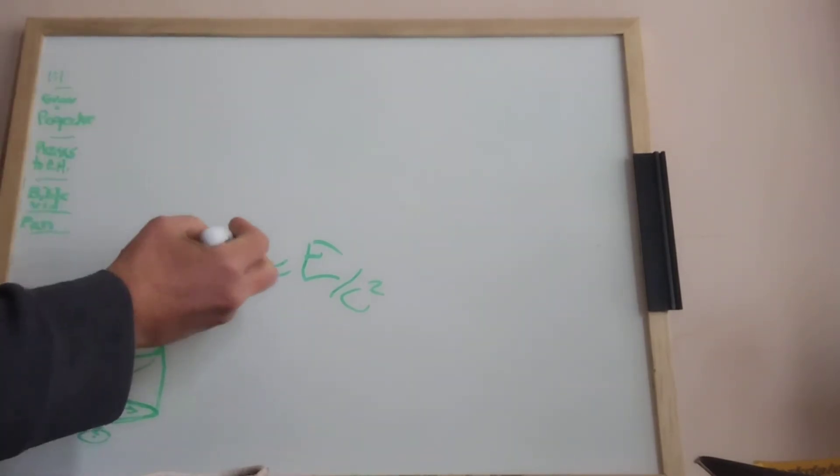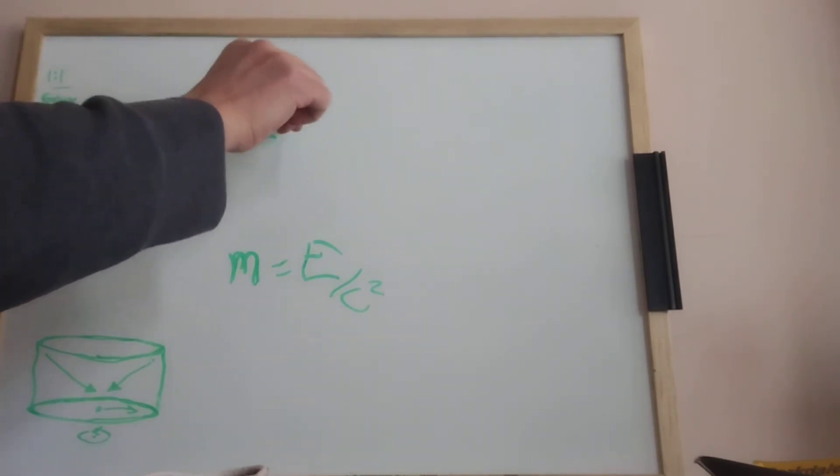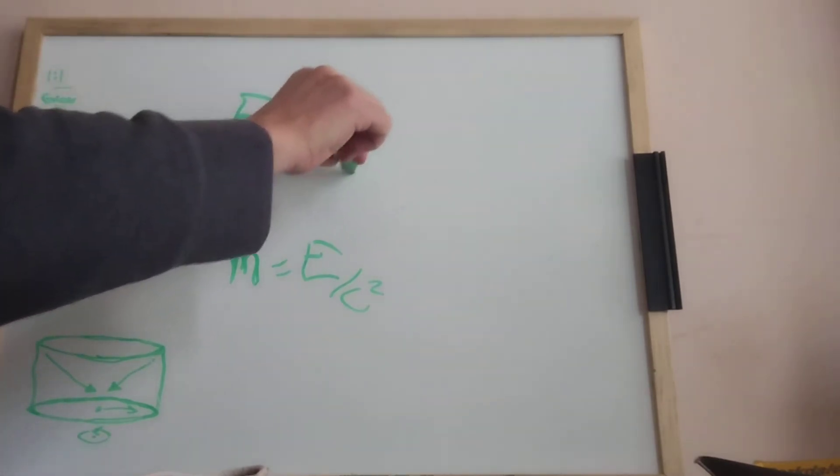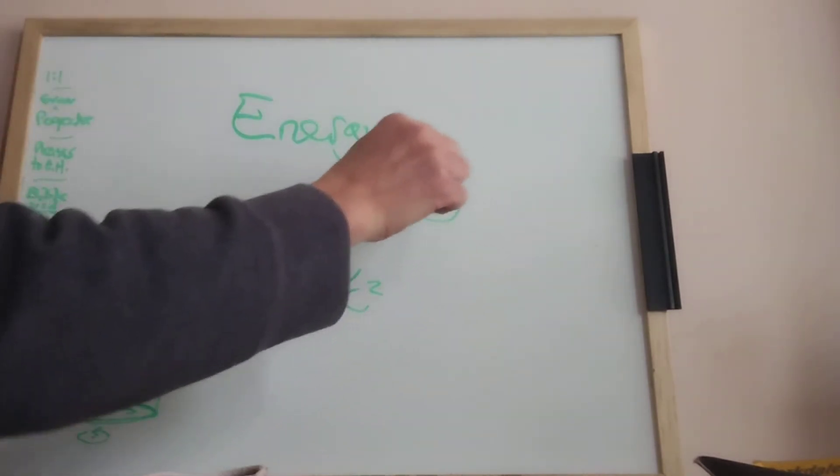In the first place, m equals E over c squared. So mass equals energy. When we're talking about mass, we're going to be talking about little spherical Planck-like unity things. So we have energy and it's going to be distributed over a sphere.